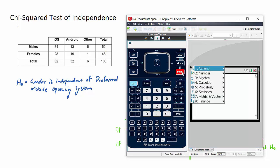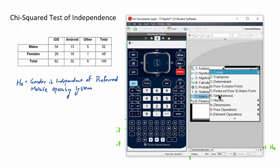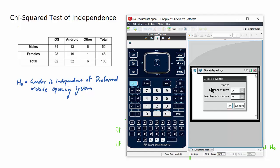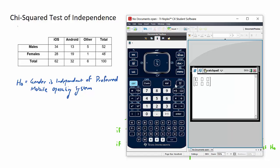To do that, we go menu, number seven, matrix and vector, number one, create, number one again, matrix. Now we need to define the dimensions of the matrix, how many rows and how many columns. We don't take into consideration the total rows and columns, it's just the data. So in this case here, we have two rows, gender, three columns, operating systems. So two rows, three columns. So we have our matrix.